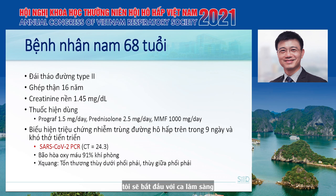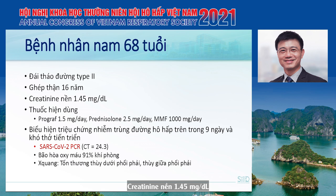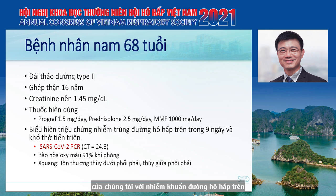I will start with a case scenario. This is a 68-year-old man with type 2 diabetes mellitus. He had kidney transplantation 16 years ago, the baseline creatinine was 1.4, and he is receiving immunosuppressive agents. He was admitted to our hospital with upper respiratory tract infection, and eventually COVID-19 was diagnosed.